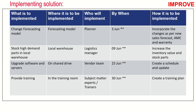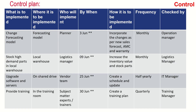All solutions were implemented using a 4W1H framework — what is to be implemented, where, who will implement it, by when, and how. A control plan was created in which implemented solutions are monitored by operations managers, logistics managers, IT managers, and training managers, checked on a defined frequency. By implementing all of these solutions, the team was able to improve their NPS score to 80% in the next three months — which was a great achievement.